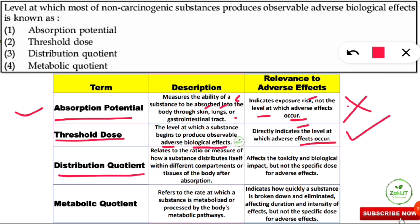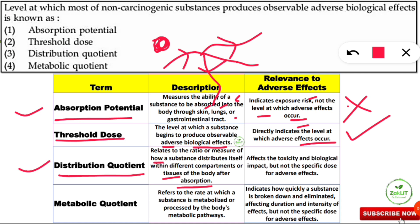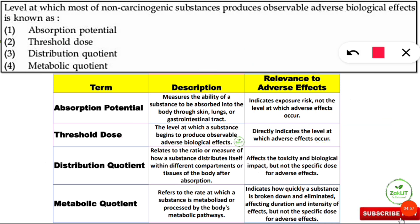Next is distribution quotient. Distribution quotient relates to the ratio or measure of how a substance distributes itself within different compartments or tissues of the body after absorption. For example, how a substance taken directly or indirectly spreads throughout the blood vessels and tissues in our body after absorption — that is the distribution quotient. Its relevance to adverse effects: it affects the toxicity and biological impact but not the specific dose at which adverse effects occur.